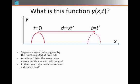In the time t prime that has elapsed, the wave pulse has moved a distance d, which is velocity times time. I'm assuming that this wave has some characteristic velocity at which it's going to travel.